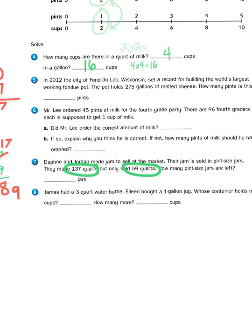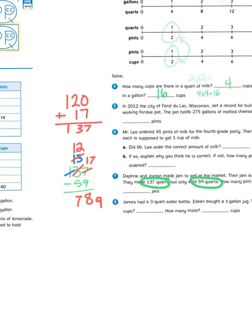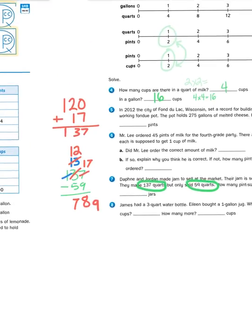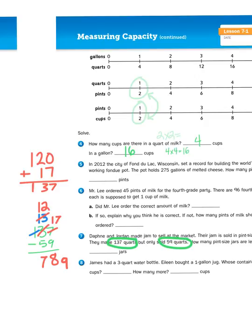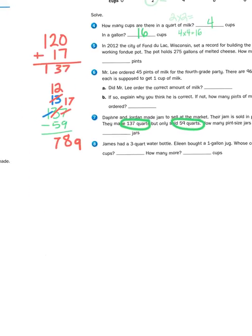Now I need to know how many pint-sized jars. So I go back to my table up top, and as you can see, there are 2 pints for every quart. So all I have to do is take my number 78, which is quarts, and then I'm going to multiply it by 2, because there are 2 pints for every quart.